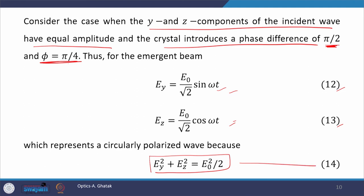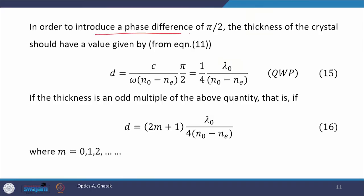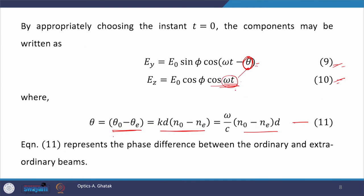What we found is that if we launch light polarized at 45 degrees with respect to the z-axis and it is incident on a quarter wave plate, then this linearly polarized light is converted to circularly polarized light. This is the beauty of wave plates — they convert the polarization state. To introduce a phase difference of π/2, we must tune the thickness d according to equation 11.